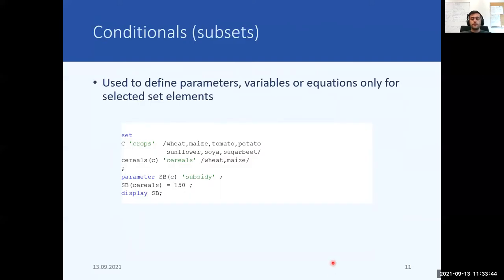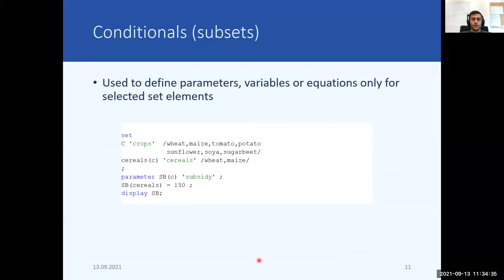Conditionals. We can also use the subsets we have already talked about to define parameters, variables, or equations only for selected set elements. For example, if we have a set C for crops, we can define a new set for cereals and only include the cereals in this subset. And we can define a parameter SB for the subsidy of cereals. Note that we are declaring the parameter SB over the set C, however defining it over the subset — meaning only for cereals we assign a subsidy of 150 euros per ton, for example.